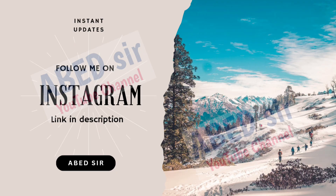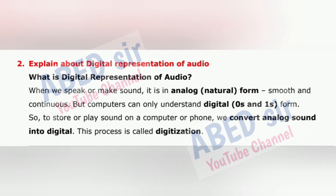Next important short question 2: Explain about digital representation of audio. When we speak or make sound, it is in analog — natural, smooth, and continuous form. But computers can only understand digital form — zeros and ones. So to store or play sound on a computer or phone, we convert analog sound into digital. This process is called digitization.